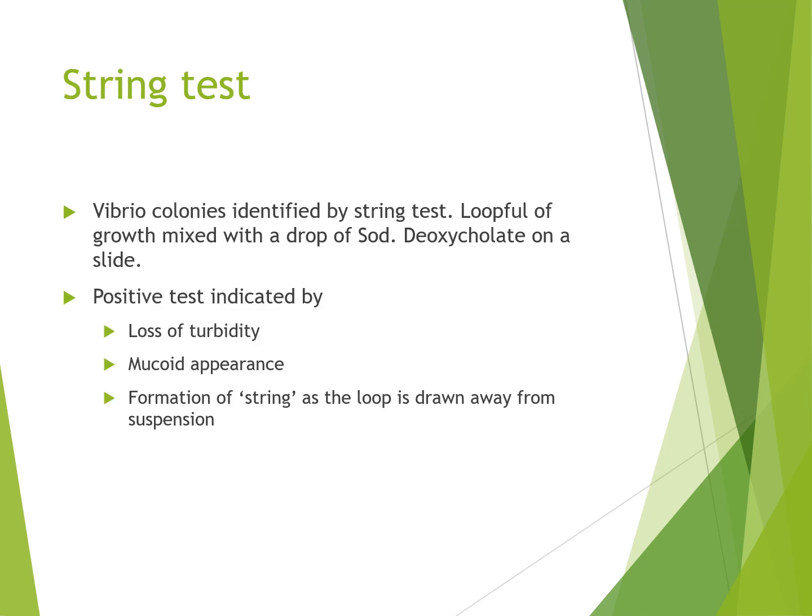A string test can also be used to identify Vibrio colonies. A loopful of growth is placed in a drop of sodium deoxycholate on a slide. A positive test is indicated by loss of turbidity, a mucoid appearance, and the formation of a string as the loop is drawn away from the suspension.